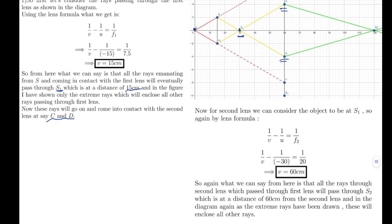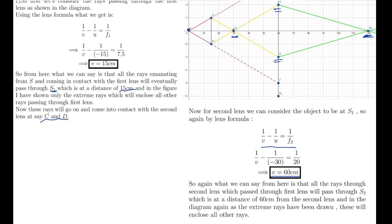Again using the lens formula, 1/V − 1/U = 1/F2, the value of V — the image for the second lens — comes out to be 60 cm. So the image forms at S2. All the rays that passed through both lenses will converge at S2, which is 60 cm from the second lens. The extreme rays in the diagram enclose all the other rays. This is case one.